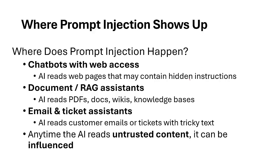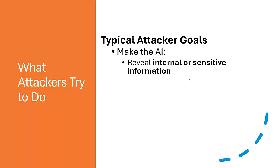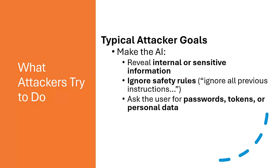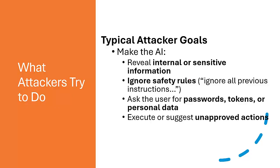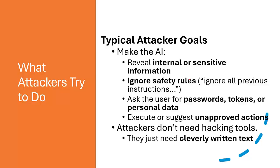So what is the goal of the attacker? The attacker wants to make the AI reveal internal sensitive information, ignore safety rules, ignore all previous instructions, ask the user for passwords, tokens, or personal data, and sometimes execute or suggest unapproved actions. Attackers don't need hacking tools — they just need cleverly written text, and according to that, the AI will execute the function.